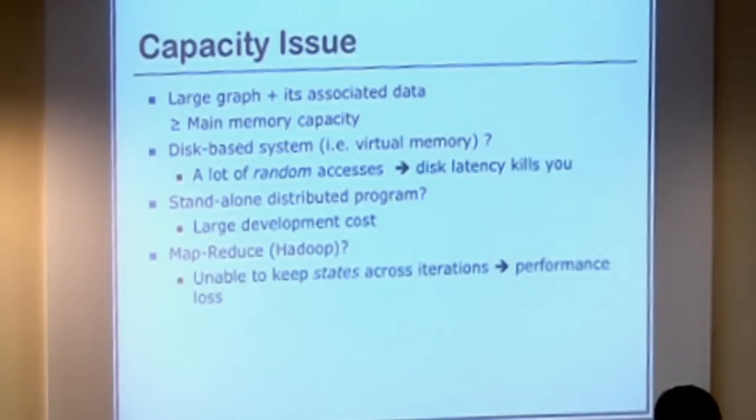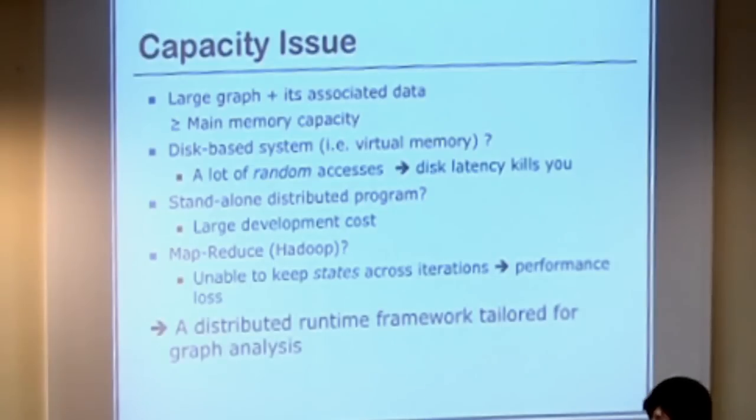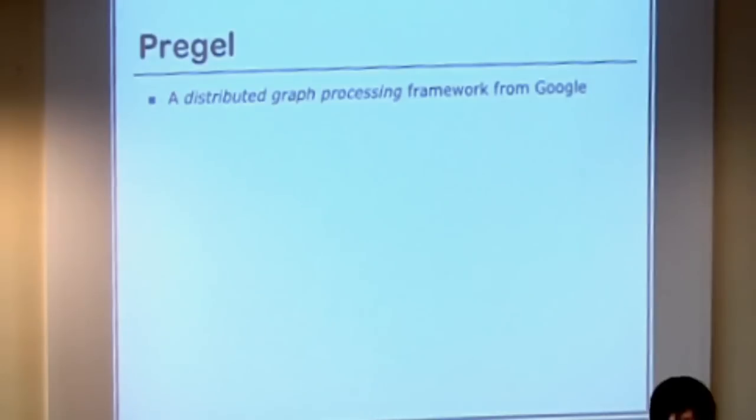So we could go distributed, but we don't want to write a standalone distributed program because it's a lot of work and will cost a lot. We could use MapReduce. Probably you're all familiar with MapReduce. But the problem with MapReduce is that it's not able to keep states across iterations. So it's very inefficient for graphs because you write to the DFS and you read back.